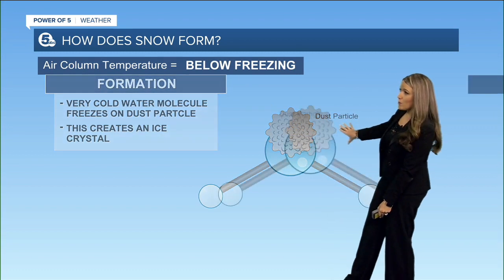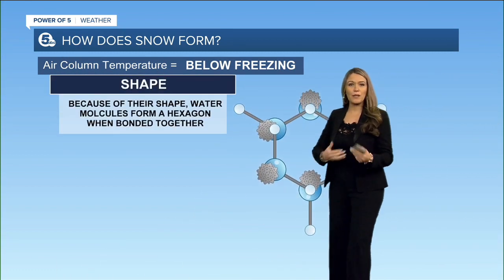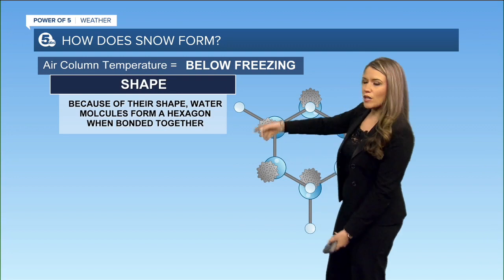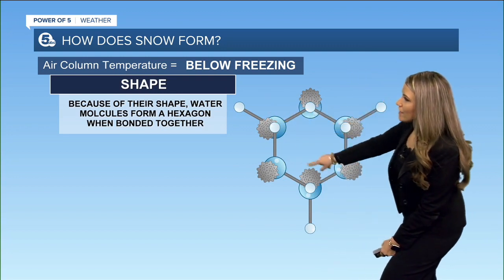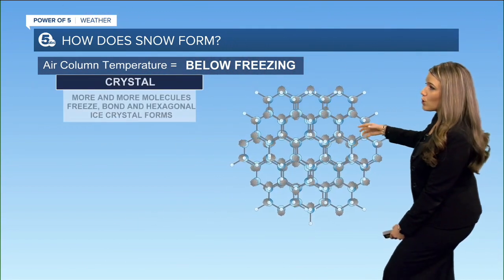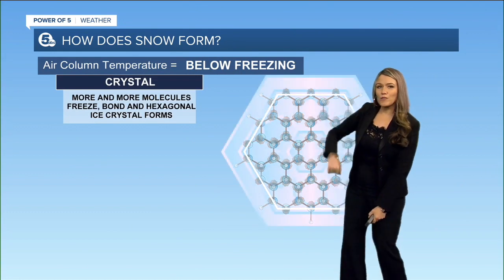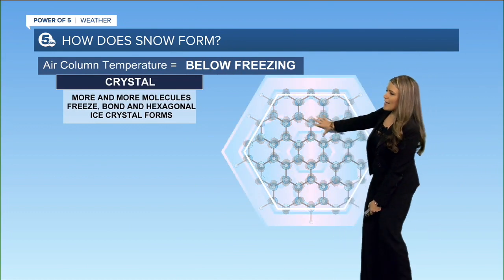You do need a dust particle for ice to form, and it builds on that. Water molecules will arrange into a shape and then continue to grow. You start to see the arms of the crystal — we call those dendrites.